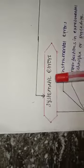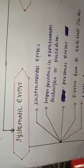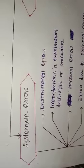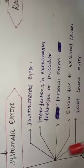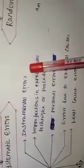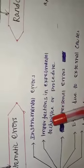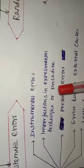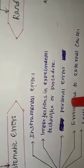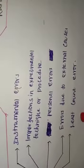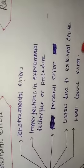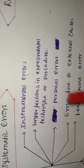Systematic error is nothing but the error within the system. This error is present constantly in the measurement, so it is called systematic error. Systematic errors are classified into many types: instrumental error, imperfection in experimental technique or procedure, personal error, error due to external causes, and least count error.